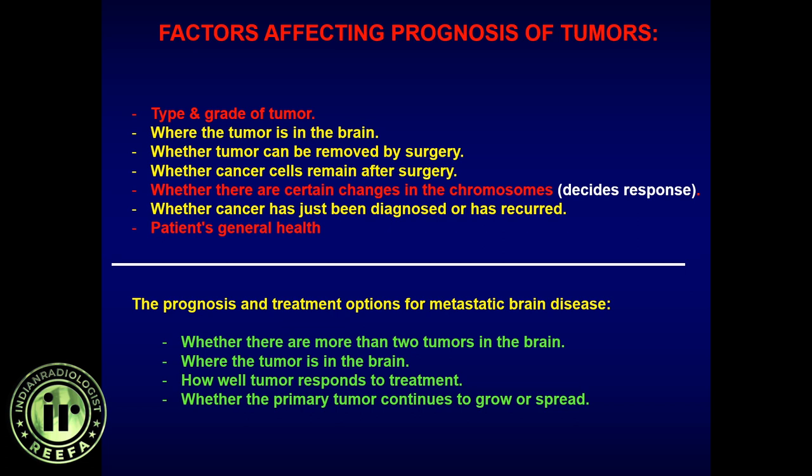Grade also matters: grade one has very good response, grade four very poor. Chromosomal markers also play a role — IDH mutant, co-deletion, increased p53 expression, and ATRX are good prognostic markers; TERT is a poor prognostic marker. If only debulking was possible and tumor remains, immediate recurrence and poor prognosis are expected.